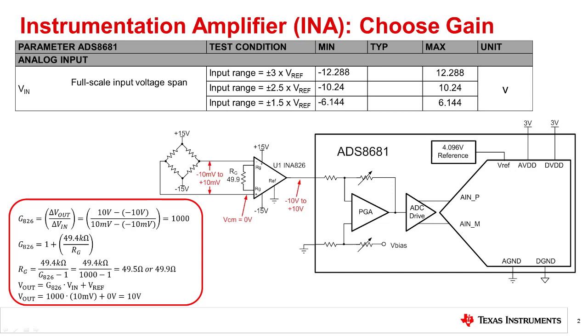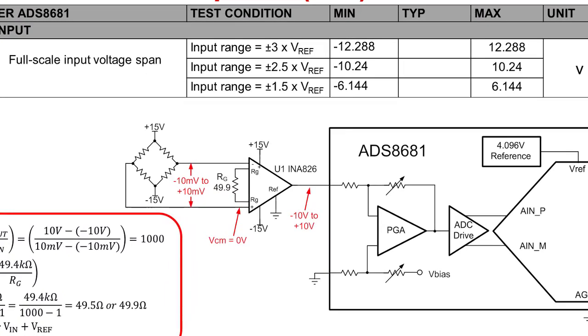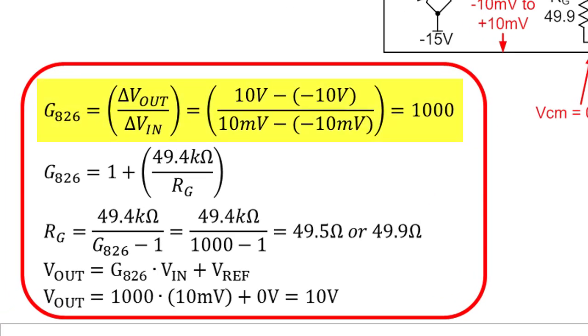This example shows how gain scaling can be done for a typical INA plus ADC example. The input signal in this example is plus minus 10 millivolts. The data converter has several ranges. In this case, we will choose plus or minus 10 volts and scale the INA output to match the ADC input range. The gain requirement can be calculated by taking the output range and dividing by the input range. In this case, the gain is 1,000.